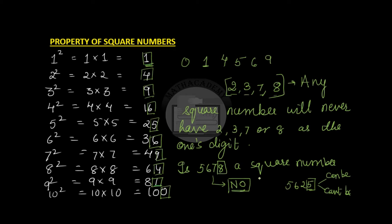So this is the first property of square numbers: a square number never ends with a digit 2, 3, 7, or 8.